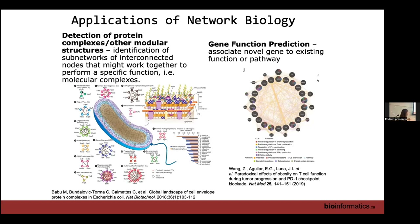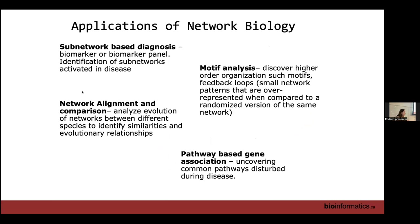One really nice thing about using networks is that you can represent your data in a pretty picture. For example, from a protein-protein interaction network you can find complexes — groups of proteins that work together to do a certain function. There's also GeneMANIA, which helps with gene function prediction: you have a given set of genes with known functions and a new gene associated with those genes, and you can potentially infer its function from the known proteins.